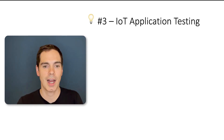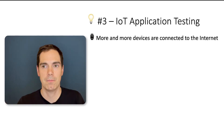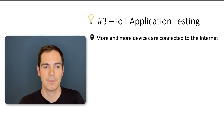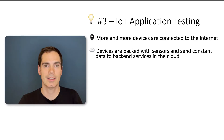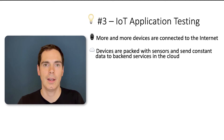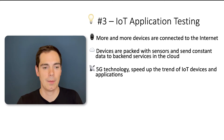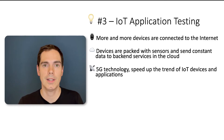The third trend is IoT applications and IoT application testing. More and more devices are connected to the internet — watches, sensors, virtual assistants, machines in your household, your thermostat, fridge, car — everything is connected and sending constant data. Devices packed with sensors send constant data to the backend and the cloud. One key driver is 5G technology, which speeds up the IoT trend by offering much more possibilities to send data faster and interconnect devices.